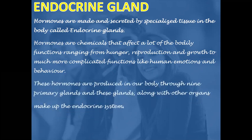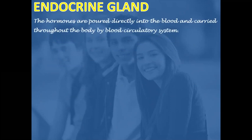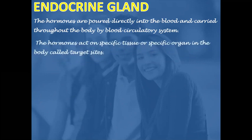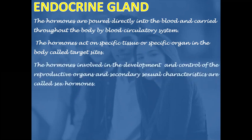Hormones affect much more complicated functions like human emotions and behavior. These hormones are produced in our body through nine primary glands, and these glands along with other organs make up the endocrine system. The hormones are poured directly into the blood and carried throughout the body by the blood circulatory system. The hormones act on specific tissue or organs in the body called target sites.